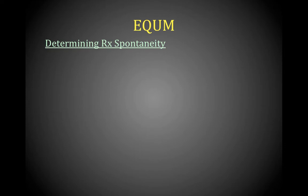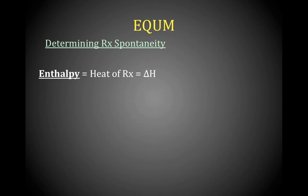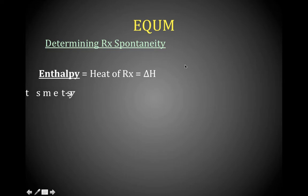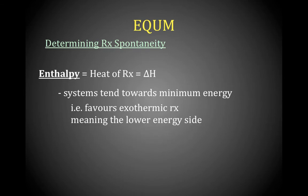We have to determine whether we're likely to have an equilibrium, no reaction, or a spontaneous reaction — and that means we need to know about enthalpy and entropy. Enthalpy, which you should know from grade 10 and 11 as heat of reaction, is delta H — the difference in energy between products and reactants. Enthalpy favors minimum energy, meaning it favors the lower-energy side — in other words, it favors the exothermic reaction. If the forward reaction is exothermic, it favors products; if the reverse is exothermic, it favors reactants.